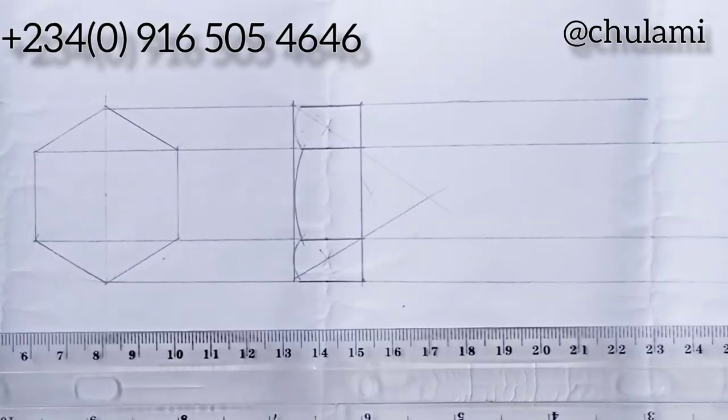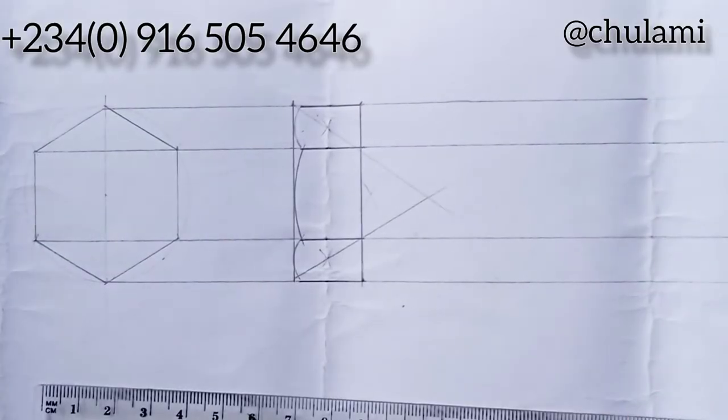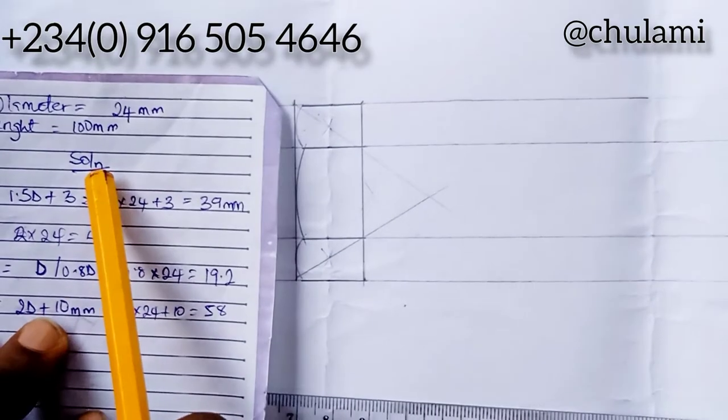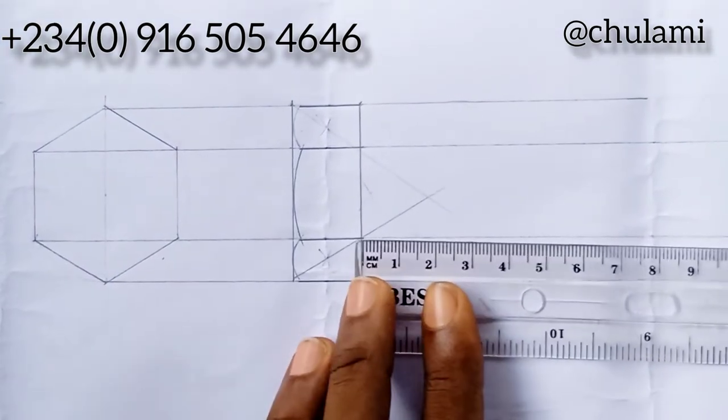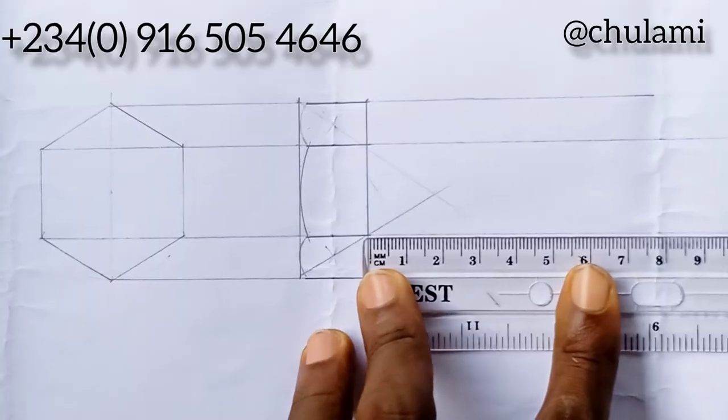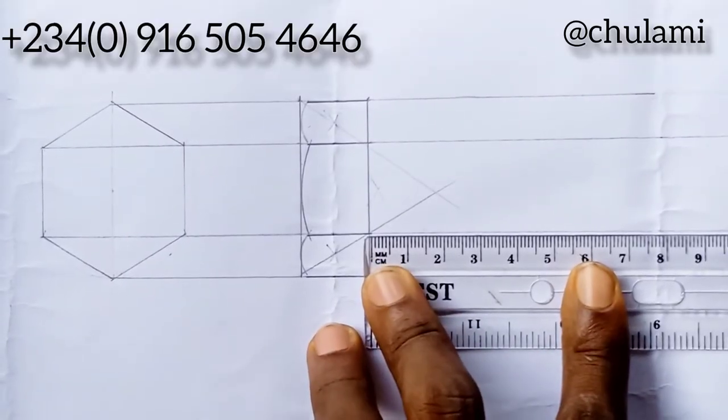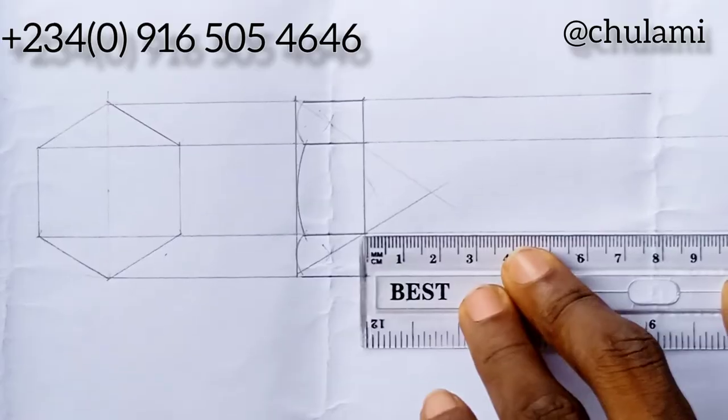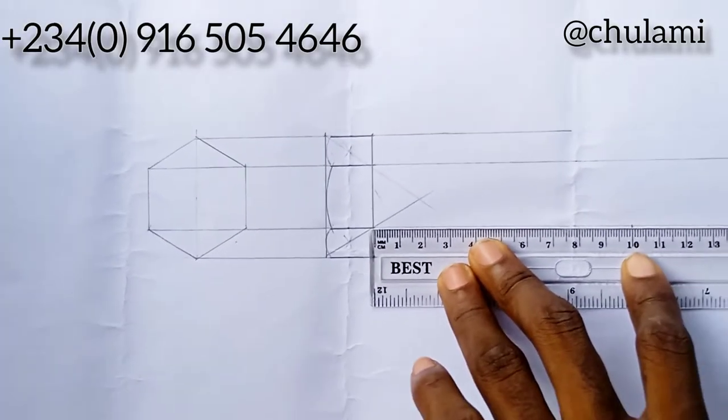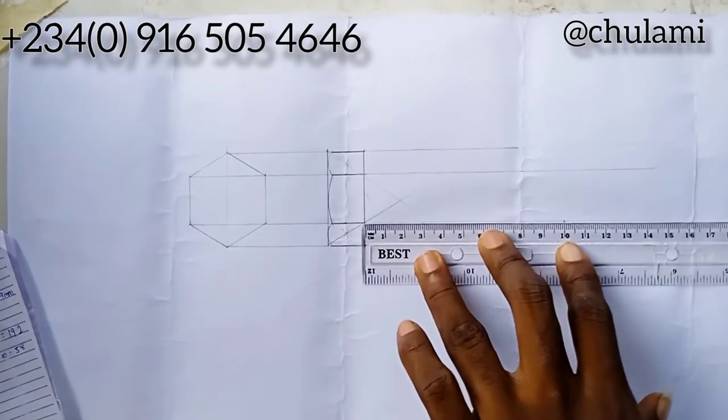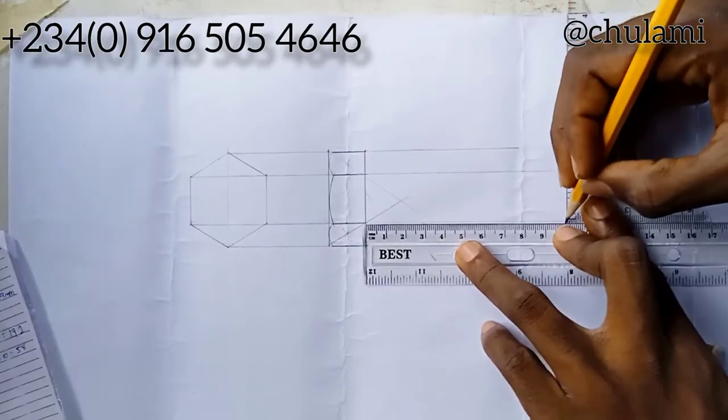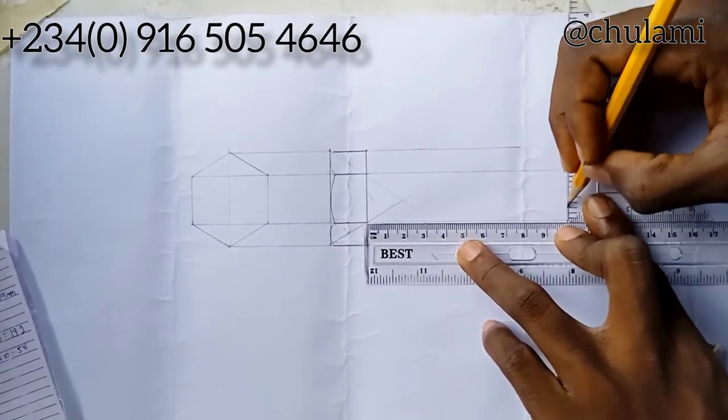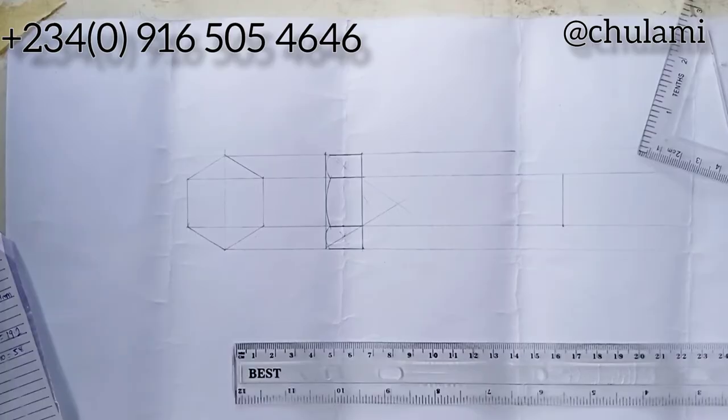We're done with the head of our bolt. Let's draw the stem of the bolt. We're given that our bolt length is 100 millimeter from the head, not from here but from this part. I'll measure 10 millimeter, get my set square, and then cut it up.